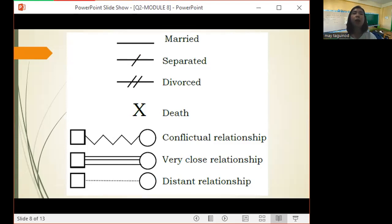Then a square and circle with a zigzag line connecting the two shapes for conflictual relationship, then a square and circle with three lines connecting the two shapes for a very close relationship, and a square and circle with a dotted line connecting the two shapes for a distant relationship.